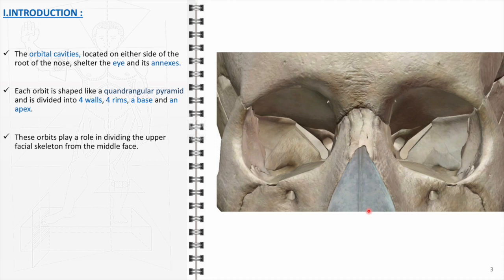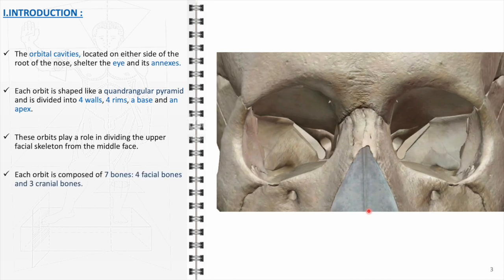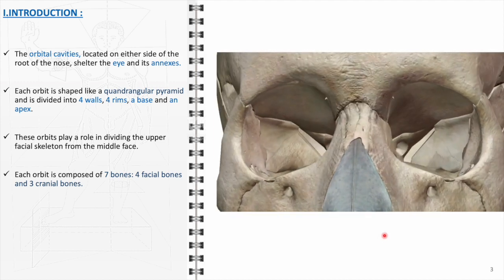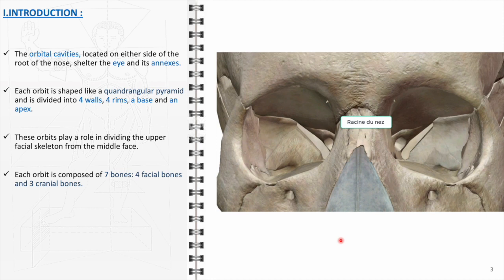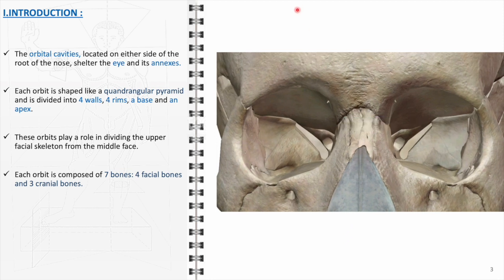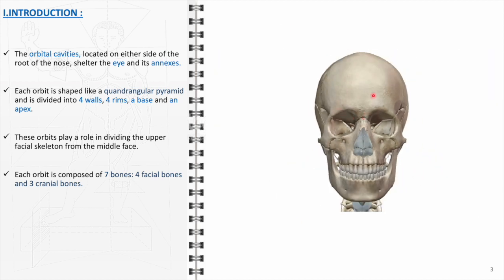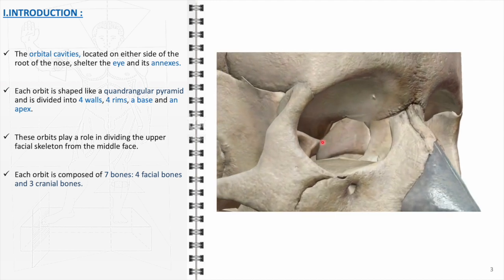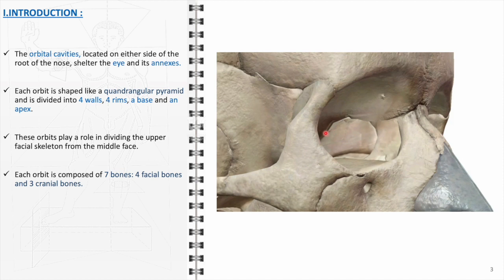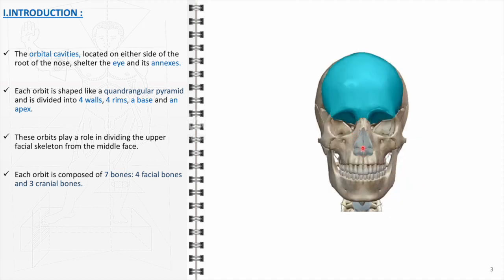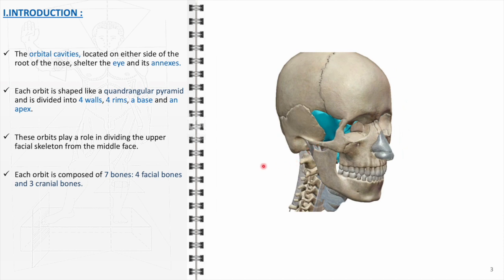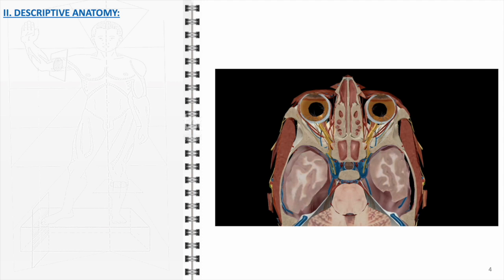An orbital cavity's structure can be dissected into several components: four walls — superior, inferior, medial, and lateral — four rims which outline the entrance of the orbit, a base at the front part opening on the face, and an apex, the deeper point inside the skull. These walls contain foramina and fissures through which nerves and blood vessels pass, linking the orbit with the cranial cavity and the face. Each orbit is formed by the convergence of seven bones — four facial bones and three cranial bones.